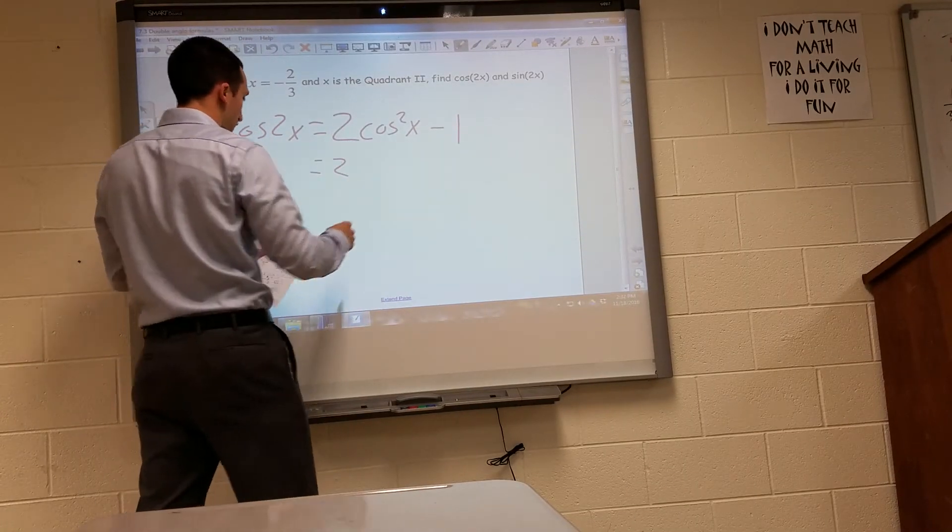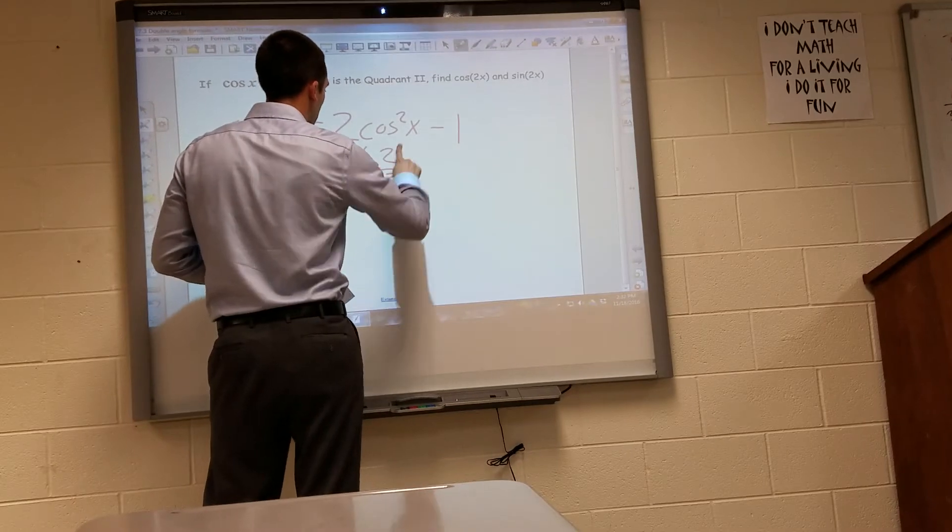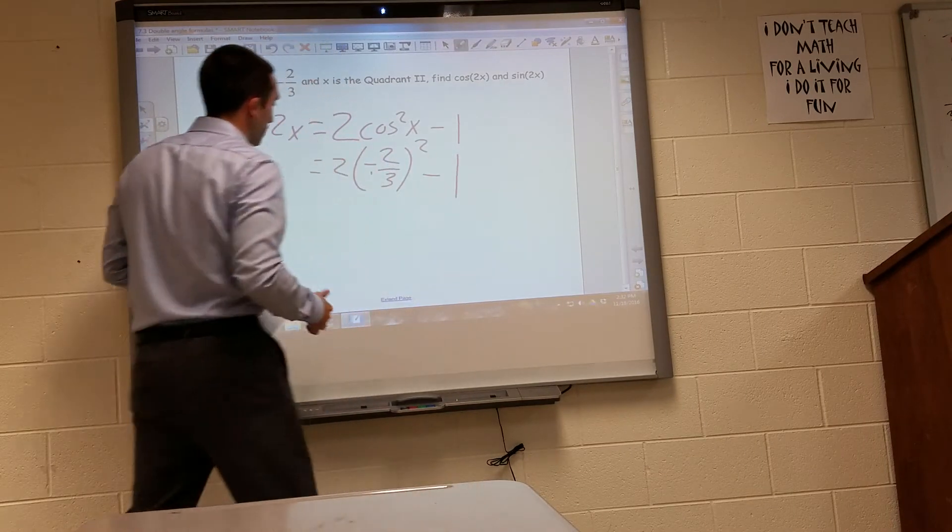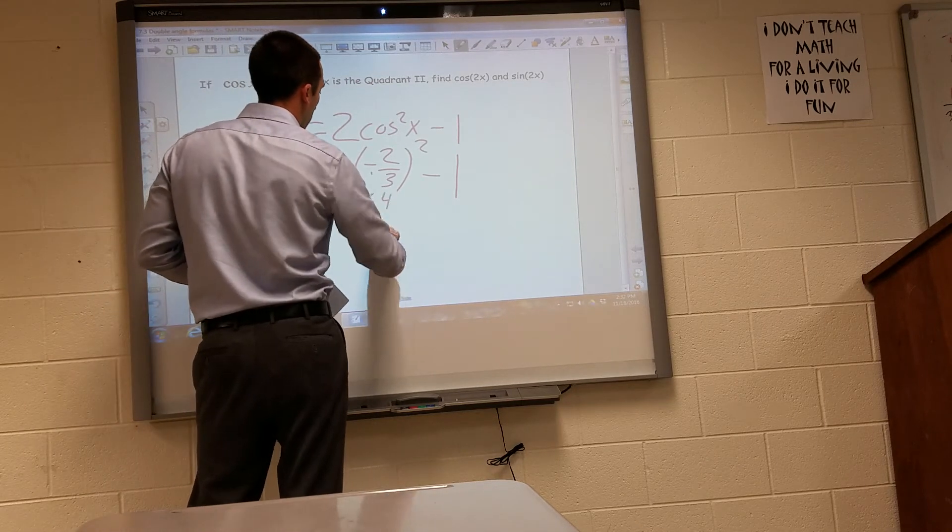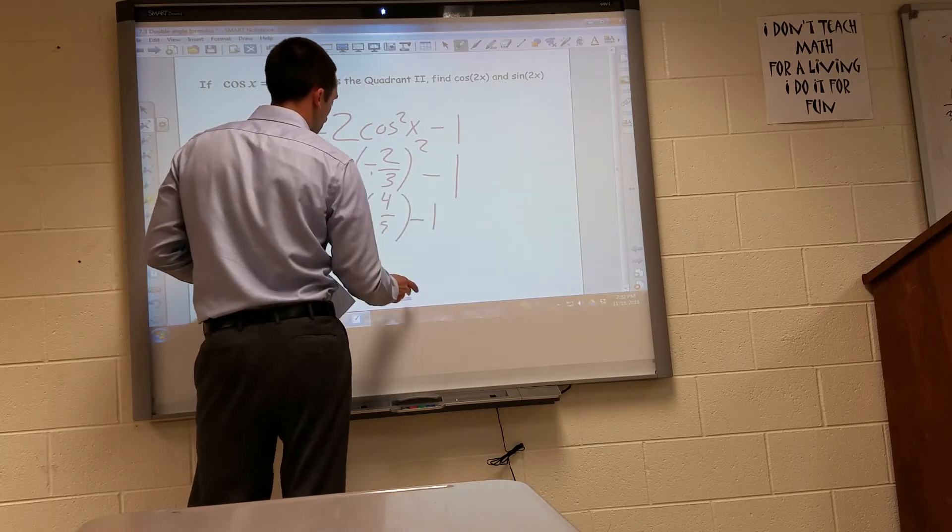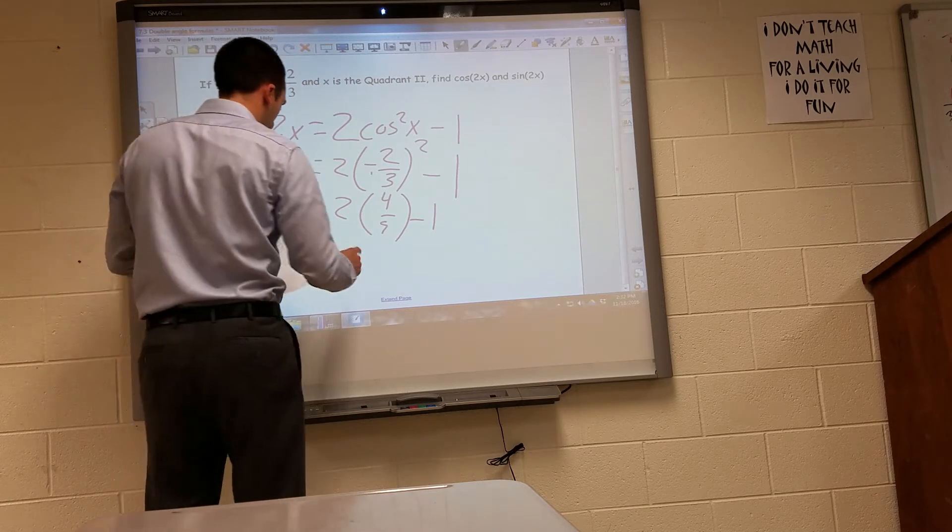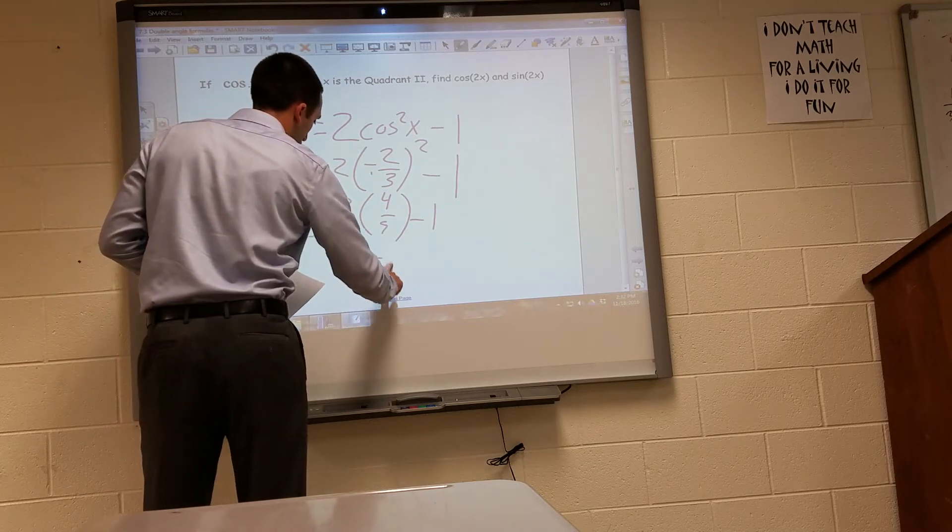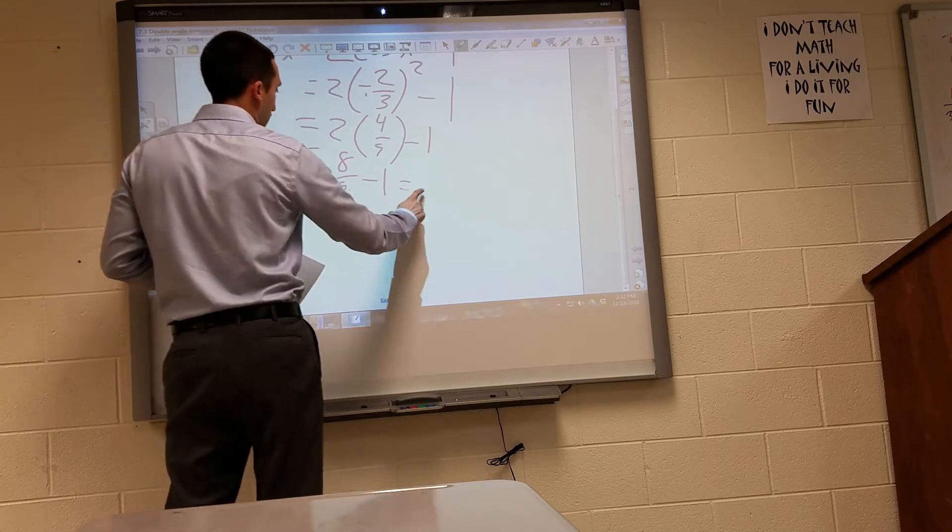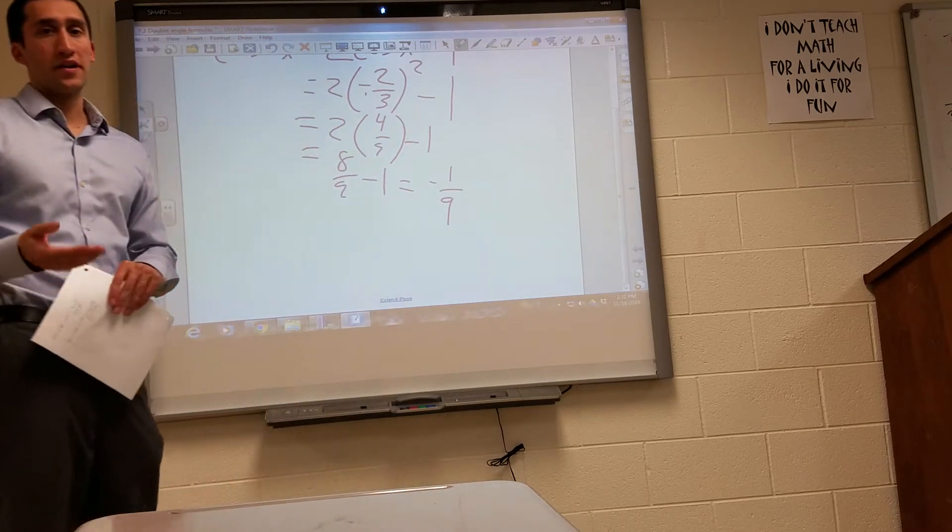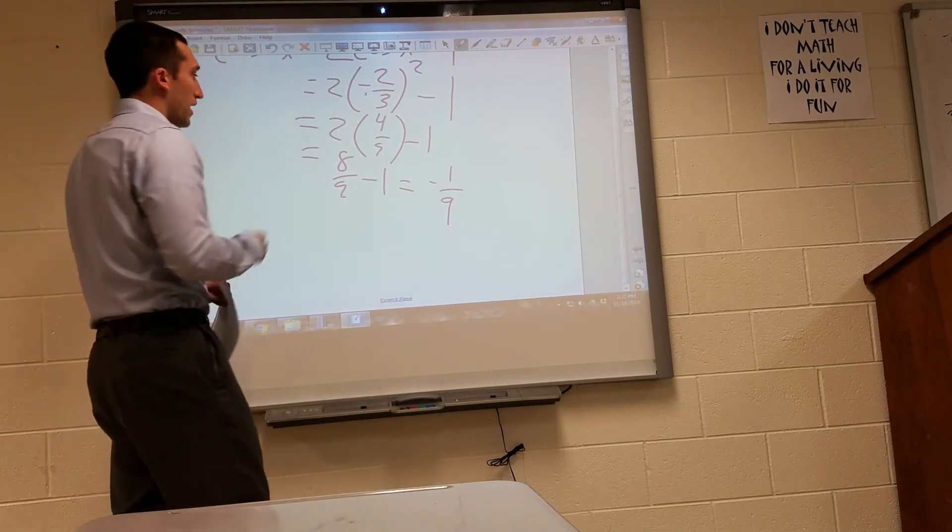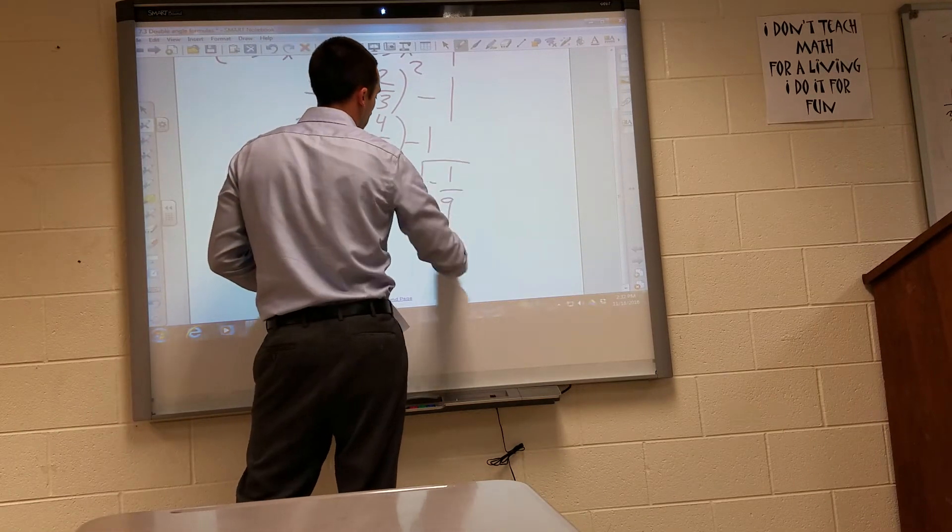Which is 2 times negative two-thirds squared minus 1, and that gives us 2 times 4 ninths minus 1, which overall gives us 8 ninths minus 1 for an answer of negative 1 ninth. I'll just turn 1 into 9 over 9, that would be 1, and 8 minus 9 over 9 is negative 1 ninth.